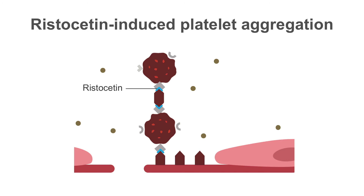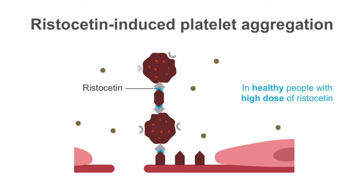Ristocetin induced platelet aggregation is another important test. Ristocetin was originally an antibiotic which is no longer used; however, it enhances the interaction of von Willebrand's factor with GP1B. Ristocetin induces von Willebrand's factor and platelet GP1B to interact, resulting in platelet clumping. This is normally seen in healthy people with a high dose of ristocetin, but not with a low dose.